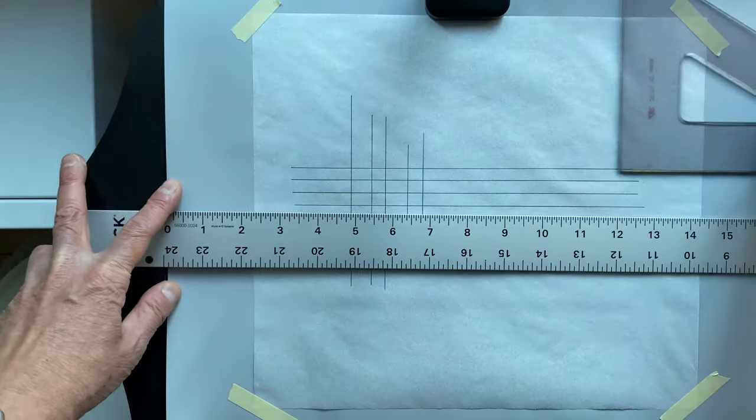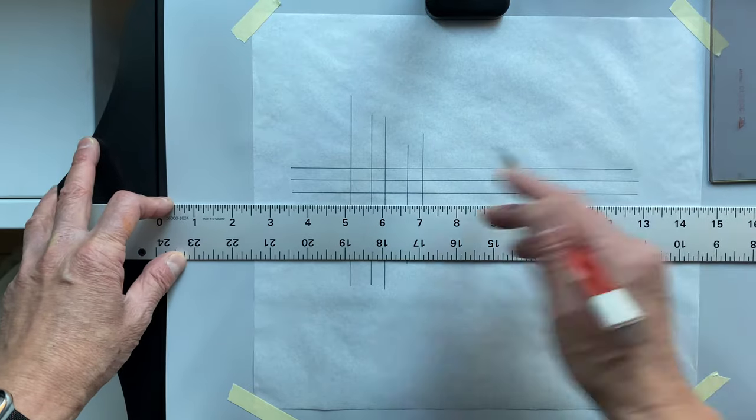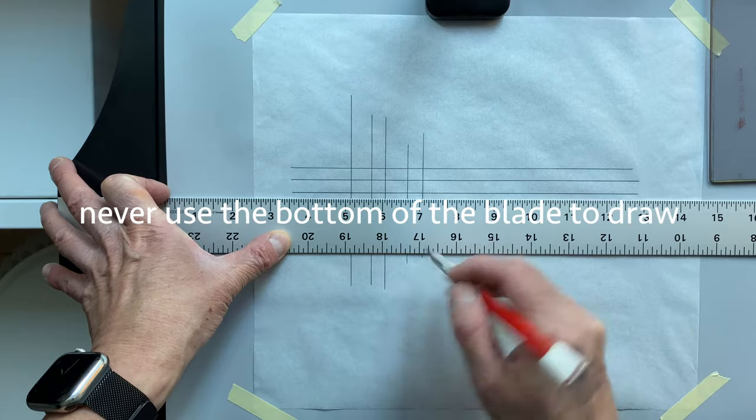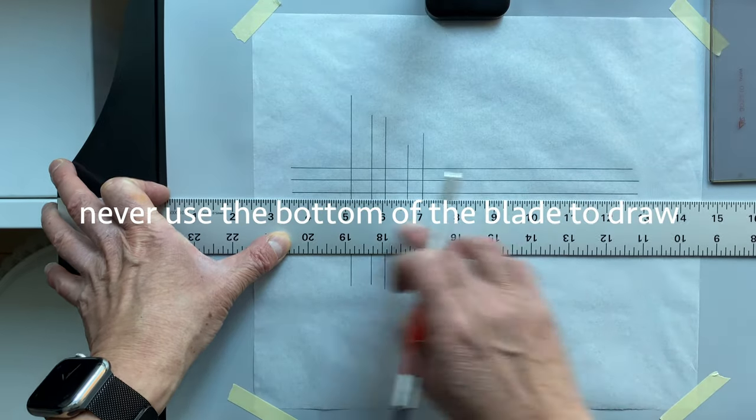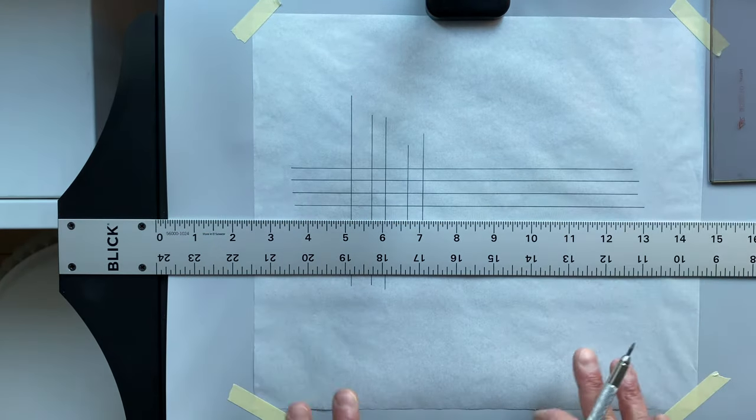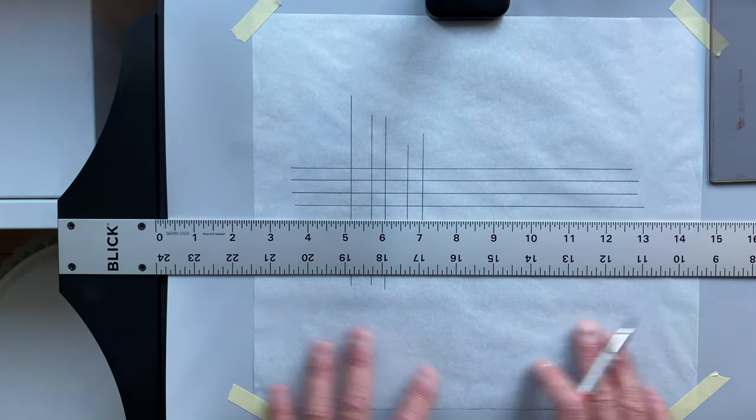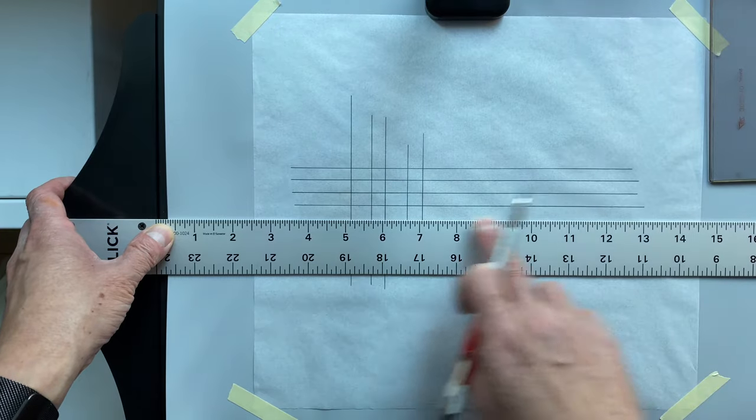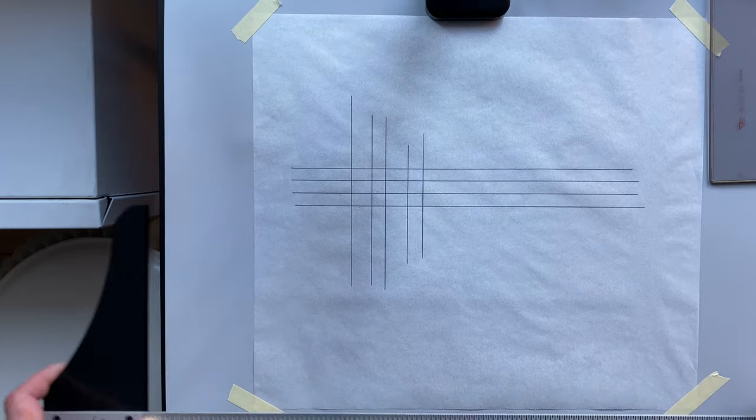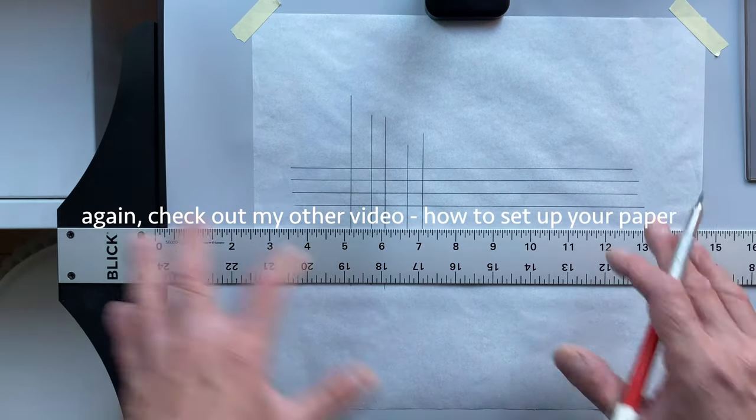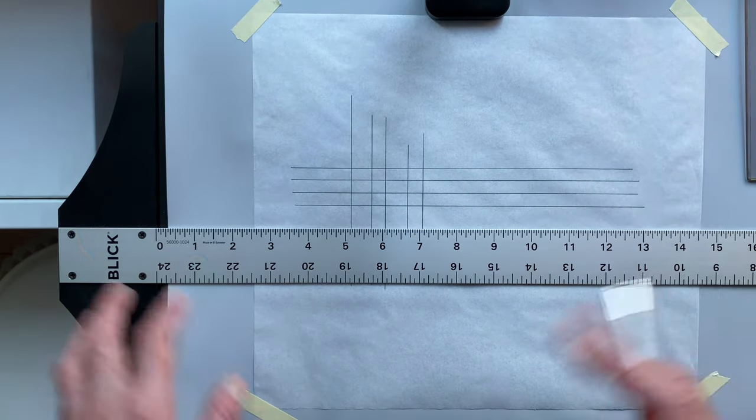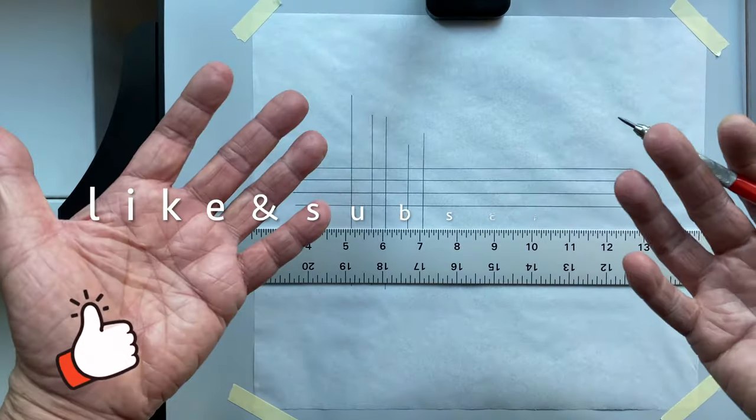One more thing regarding a T-square - just like in a parallel rule, you don't draw using the bottom of the blade, you always use the top of the blade. And regarding the placement of the paper, you want the blade to be parallel to the edge of the paper, meaning the bottom edge of the paper. There's a separate video where I show you how to set up a piece of paper, so you can go to that video and take a look at that. Well, that's it!